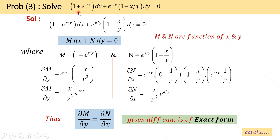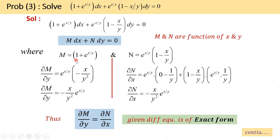Now let us take another problem: (1 + e^(x/y))dx + e^(x/y)(1 − x/y)dy = 0. Check whether this given equation is in the form m dx + n dy = 0 — yes it is. Now check for exactness. The value of m is 1 + e^(x/y), which is the coefficient of dx, and the value of n is e^(x/y)(1 − x/y), which is the coefficient of dy.